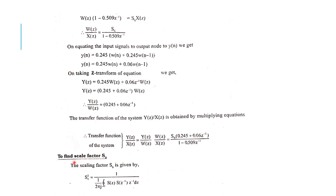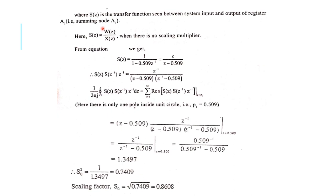Now we find the scale factor. s_0 squared equals 1 divided by (1 over 2πj) times the closed integral, where S(z) equals W(z) divided by X(z). Applying the residue theorem, since there is only one pole inside the unit circle at p equals 0.509, we substitute into the residue theorem formula and find s_0 equals 0.8608.